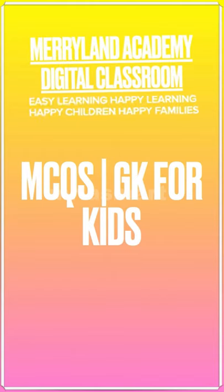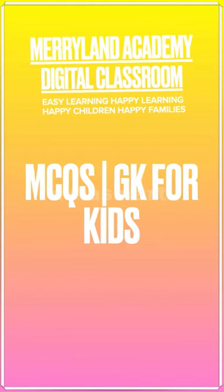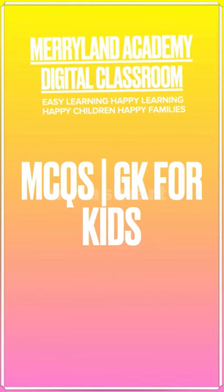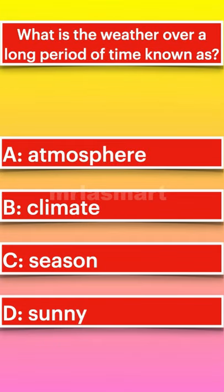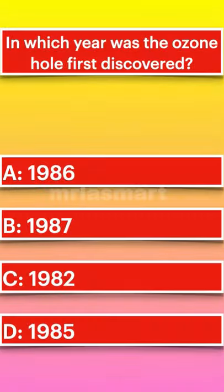Maryland Academy Digital Classroom MCQs GK for Kids. What is the weather over a long period of time known as? In which year was the ozone hole first discovered?